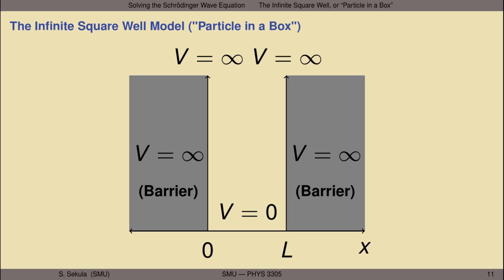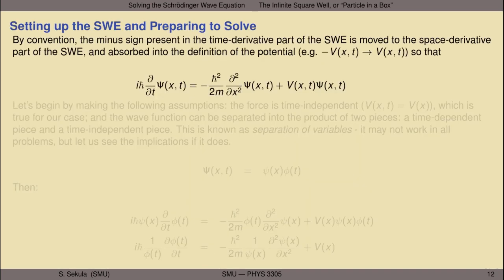Let's set up the Schrödinger wave equation and prepare to solve the problem. This is a good point to reflect on separation of variables. Let me begin by rewriting the SWE in a slightly more conventional form. The minus sign I've been carrying on the left side of the equation will be moved to the right-hand side by multiplying through by negative one, and I'll absorb it into the definition of the potential V(x, t) to avoid a stray minus sign.